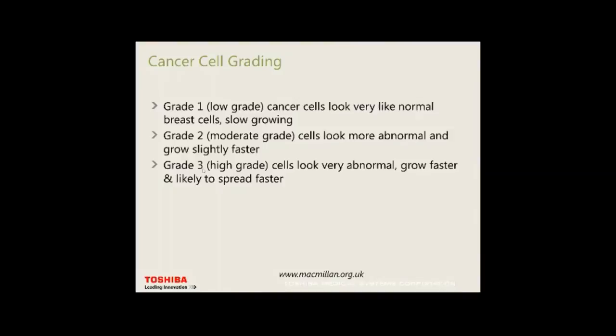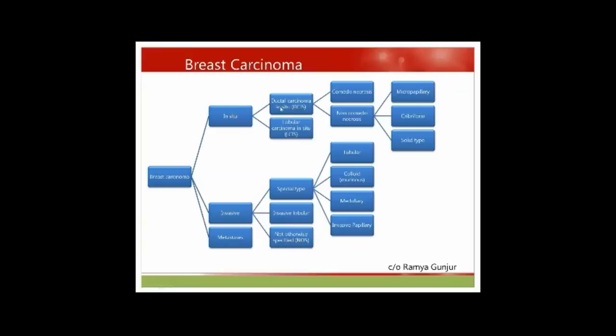Cancer cell grading is what the pathologist sees under the microscope. Grade 1 cancers look very much like normal breast cells — slower growing. Grade 2 are the most common, look more abnormal and grow slightly faster. Grade 3 look very abnormal, grow and spread faster, and tend to occur in younger patients or as aggressive inflammatory cancers.